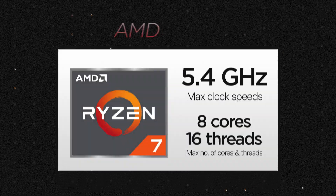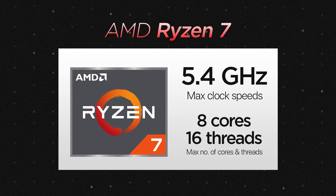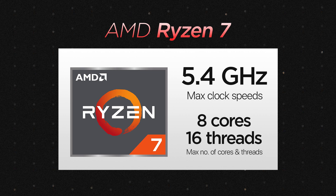The Ryzen 7 series of processors are designed for users who need more performance than the Ryzen 5 series can offer. Currently there are three: the Ryzen 7 7700, the 7700X, and the 7800X 3D. These processors typically have 8 cores and 16 threads and offer even stronger single-threaded and multi-threaded performance. They're a good choice for users who need to run demanding applications, do content creation, or even high-end gaming.